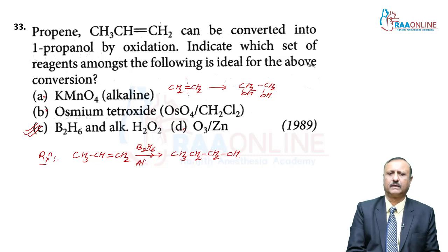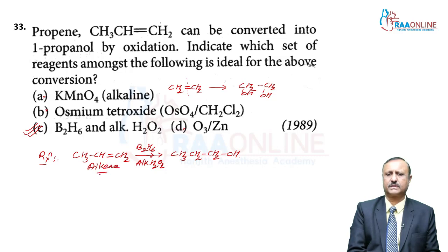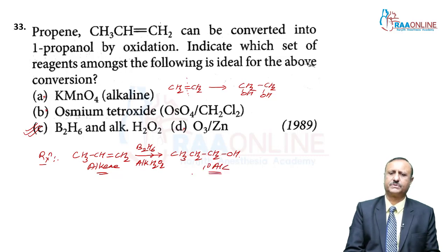As already explained, alkene reacts with diborane to give trialkylborane, and trialkylborane on hydrolysis with alkaline hydrogen peroxide gives a primary alcohol. So the answer for question 33 is option C.